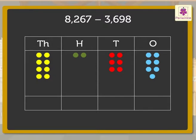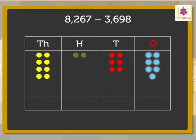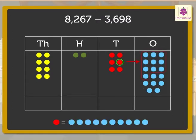Now, let us cancel the dots equal to the digits in the subtrahend in each column, starting with the ones column first. There are only 7 blue dots in the ones column and we need to cancel 8 blue dots. We cannot subtract 8 from 7. So, we regroup 1 ten to 10 ones.